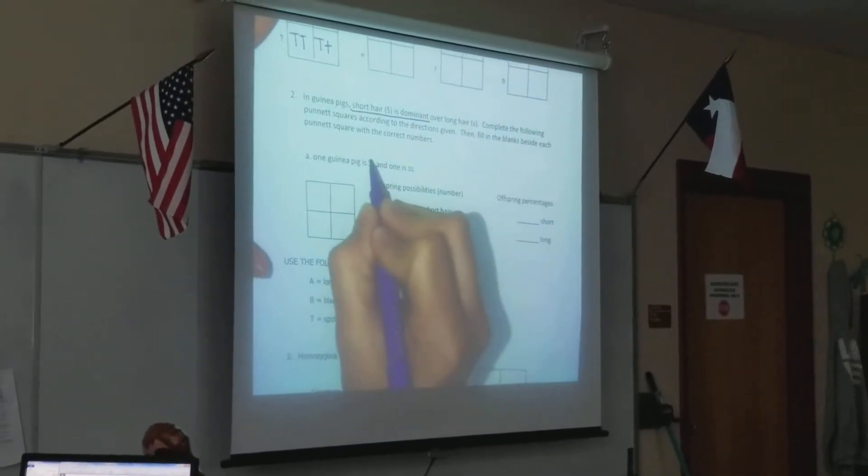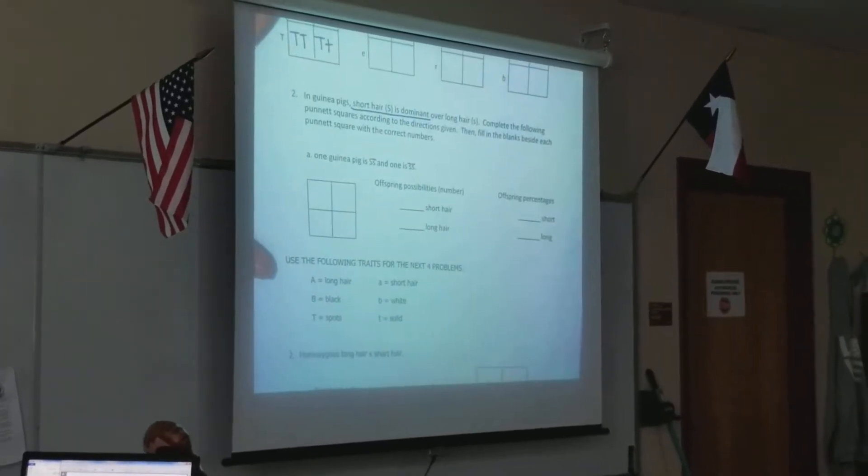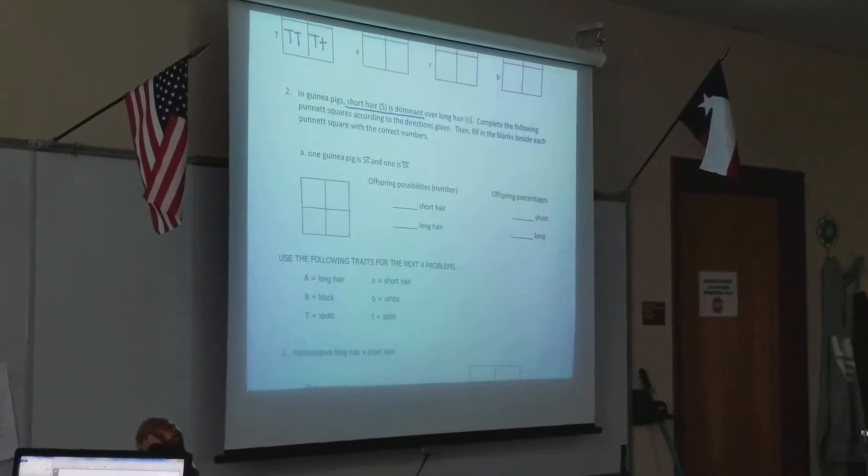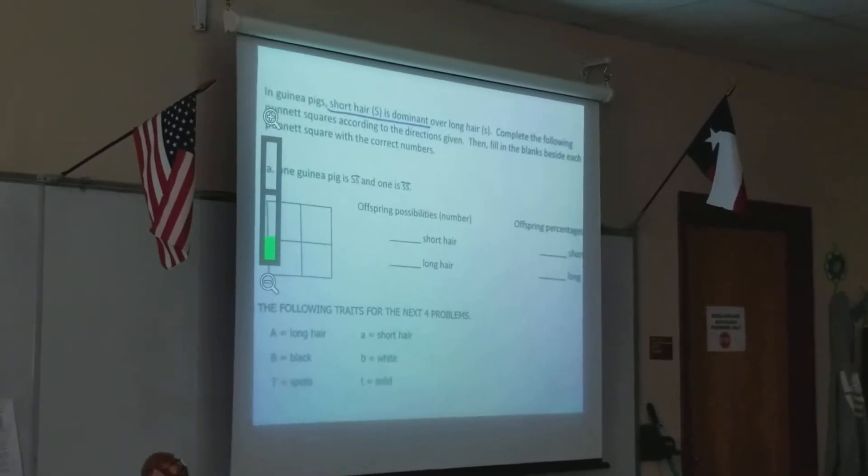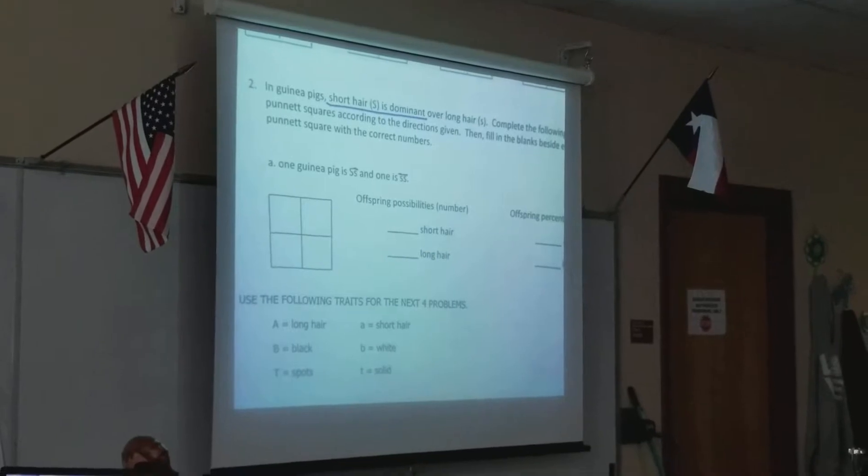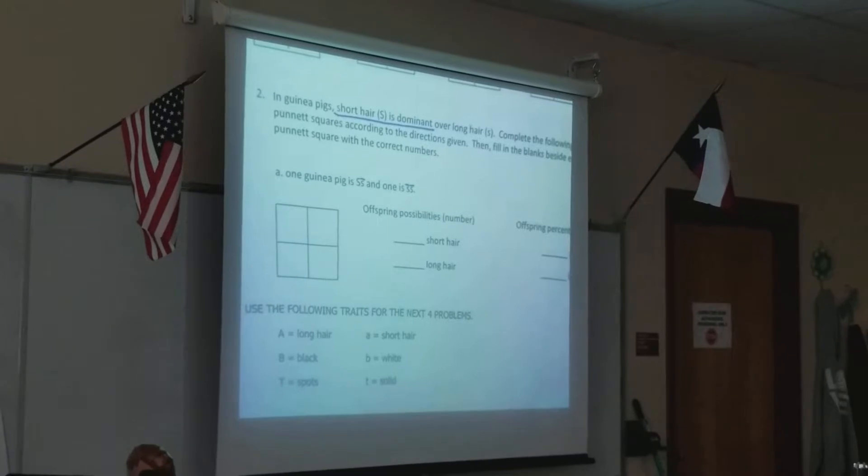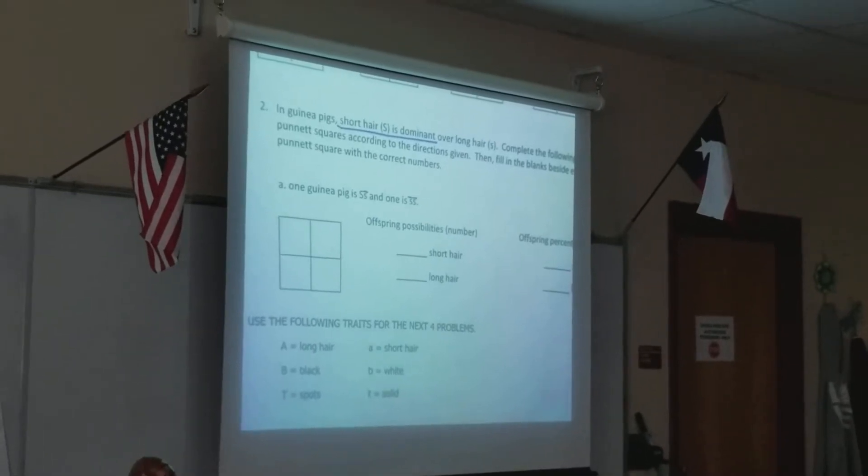I put little dashes on top of my lowercase letters. The reason being is that, now when I put them in my Punnett square, I know if it's a capital letter or if it's a lowercase letter. You'll see this in some decks of cards where the nine and the six will have a little line, so you can tell the difference between them.